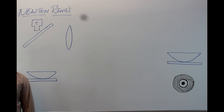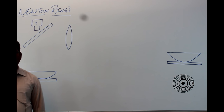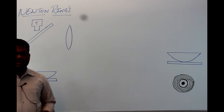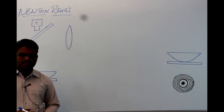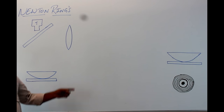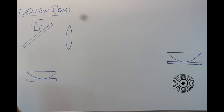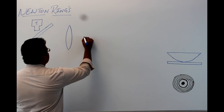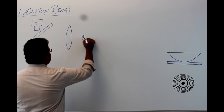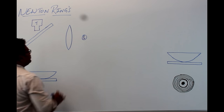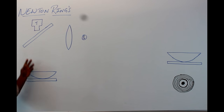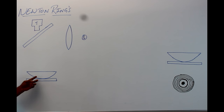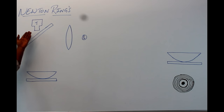Newton's rings is the best application for interference in thin films. The experimental arrangement consists of a monochromatic source of light S, a convex lens, a glass plate, a plano-convex lens, and a telescope.